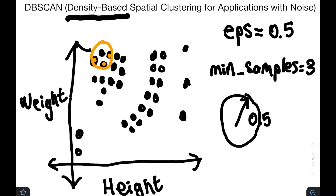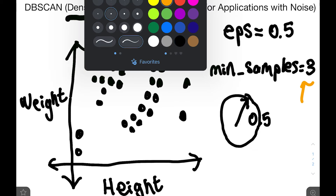It hit this point, this point, and this other point. If we do that same process for every individual point, we store in the computer how many points each epsilon circle touches. We can then compare that to the min_samples value, which is basically a threshold. If the threshold is set at three, then any point that hits at least three other points is considered what is called a core point. So many core points will be defined here.